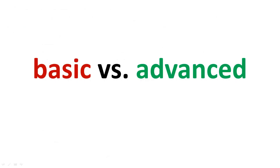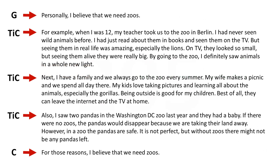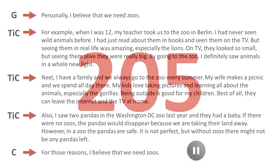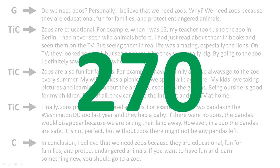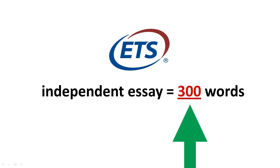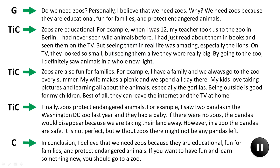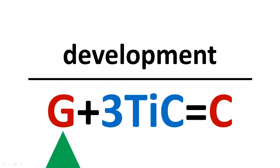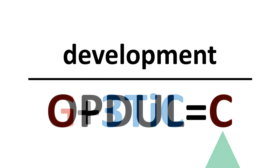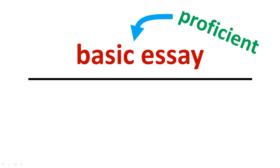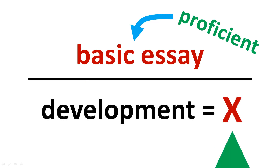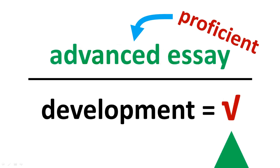Next, let's compare the two essays. This is the basic essay — it is 205 words. As you can see, the difference between the basic essay and the advanced essay is development: in the introduction, the body, and the conclusion. When you rate your essays using Optal C, D means proficient development. The basic essay is proficient; however, it demonstrates a lack of overall development. The advanced essay is also proficient; however, it demonstrates development.